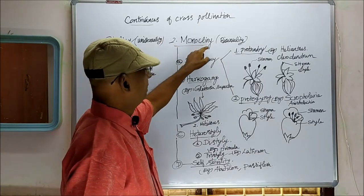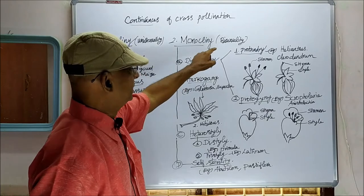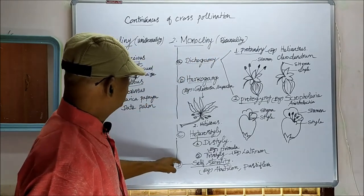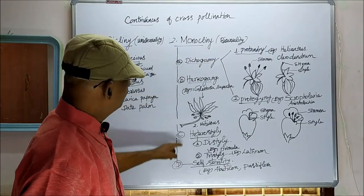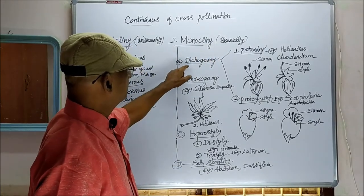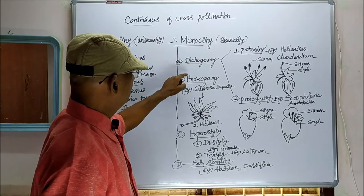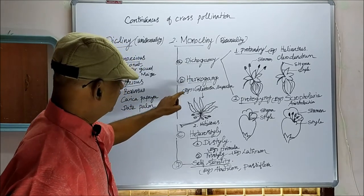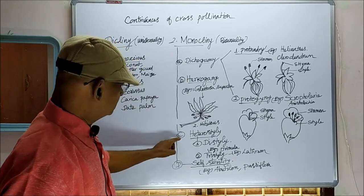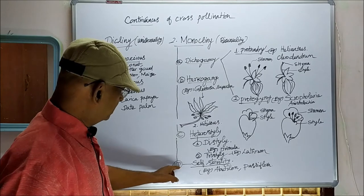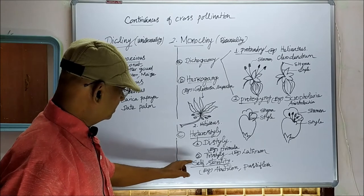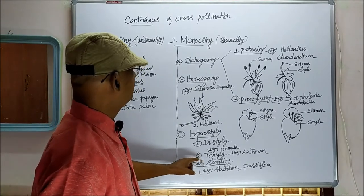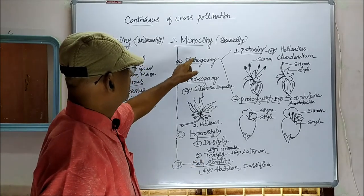Monocliny, that is bisexuality, is further subdivided into four types: number one, dicogamy; number two, herkogamy; number three, heterostyly; number four, self-sterility.